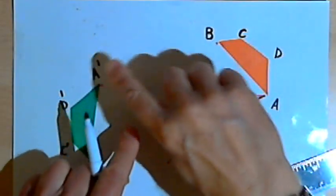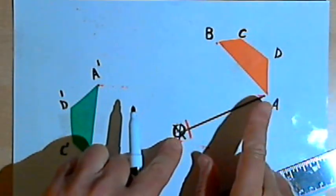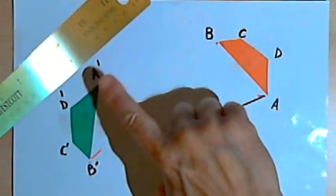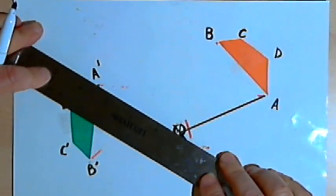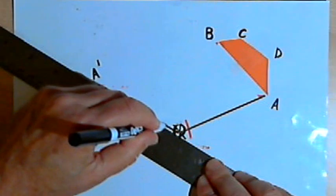Now when that image rotated, it rotated fixed at the center of rotation through an angle, so that that line ended up connecting the center of rotation and A-prime.